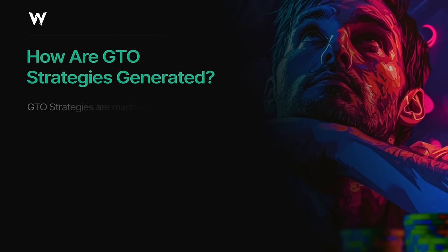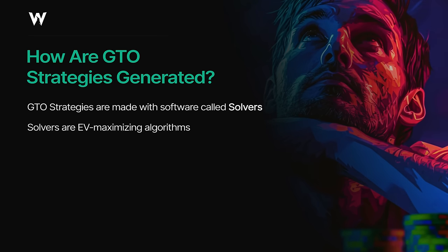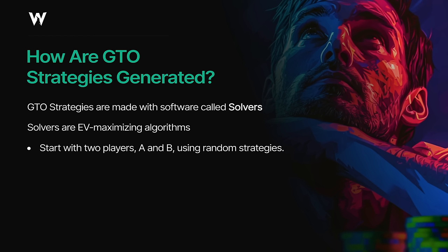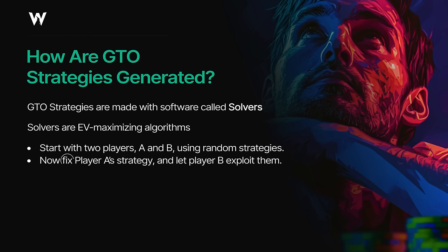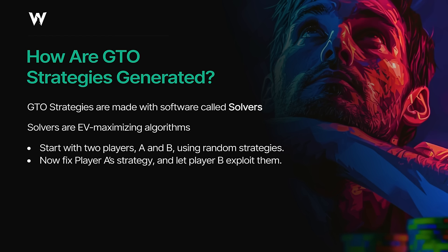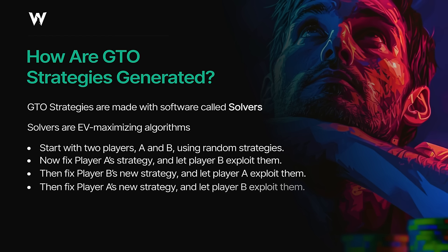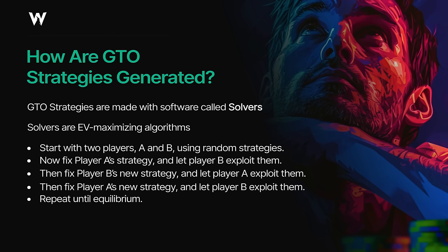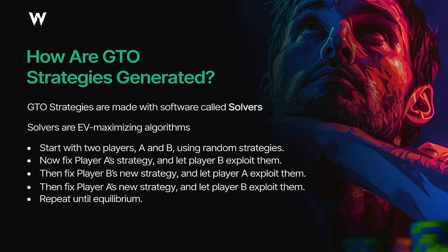How exactly are GTO strategies generated? We use software called solvers — basically EV-maximizing algorithms. Given a set of strategies, they can calculate how much money each strategy will make. Here's the recipe: start with two players using completely random strategies. Fix player A's strategy, then let player B exploit them and find a higher EV strategy. Next, fix player B's new strategy and let player A exploit them. We go back and forth, iterating thousands of times until neither player can do any better — repeating until we achieve Nash equilibrium. All implementations involve pitting EV-maximizing algorithms against each other until no one can improve further.